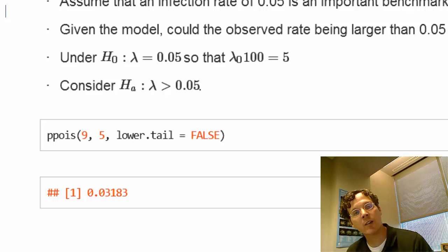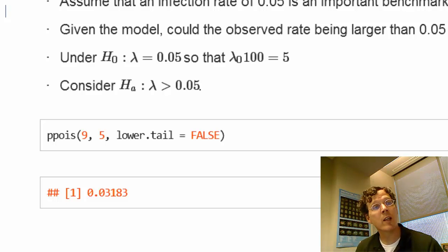Hopefully what you've gotten out of this lecture is that the way that you calculate a p-value is you calculate the probability of obtaining data as or more extreme than you actually obtained in favor of the alternative where the probability calculation is done under the null.